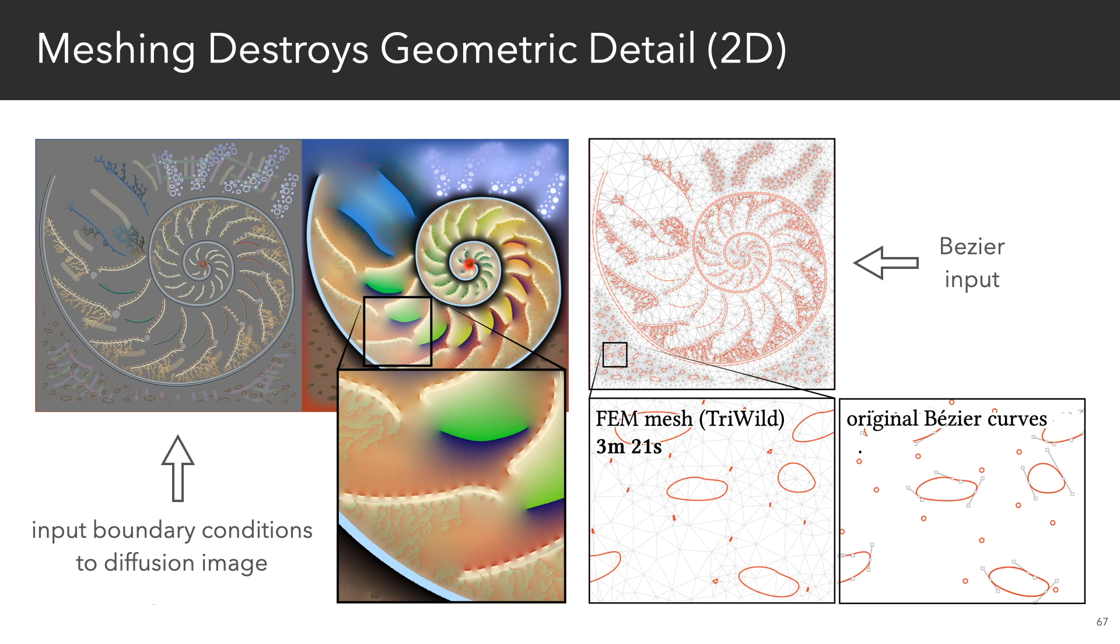To stress test our solver, we implemented diffusion curves and surfaces on complex geometry. So in 2D, robust triangulation algorithms actually fail to preserve geometric detail. But we can zoom in as far as we like without losing geometric detail, because we can operate directly on the original Bezier representation.